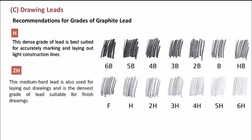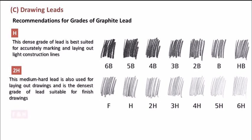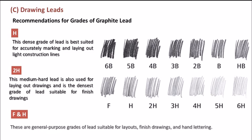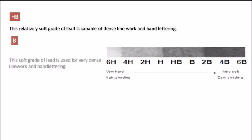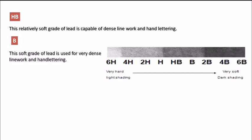2H is suitable for finished drawings. Then we have F and H, which are suitable for layouts, finished drawings, and hand lettering. Then we have HB, a relatively soft grade capable of dense line work and hand lettering. We also have B grade, a soft grade of lead used for very dense line work.